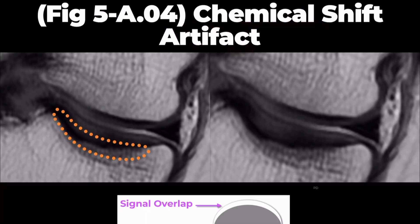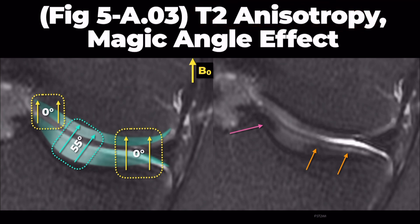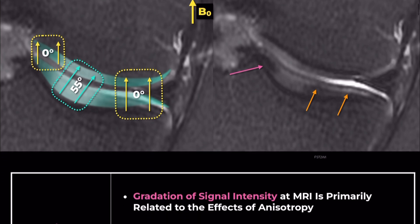Let's start with T2 anisotropy. As you know, cartilage isn't just a homogeneous substance — it's highly organized. The collagen within it has a specific structure, and this structure affects what we see on MRI.